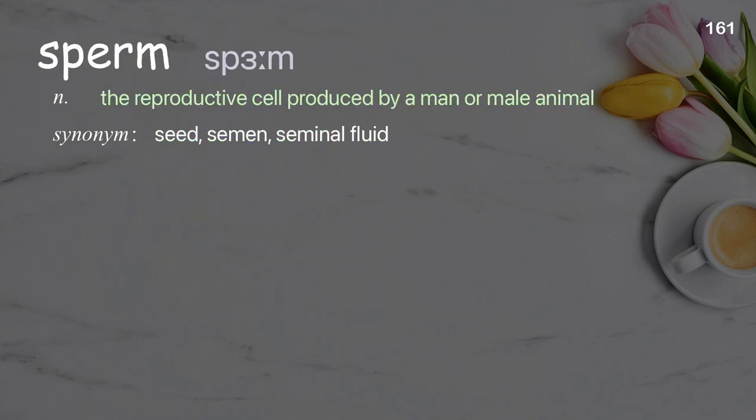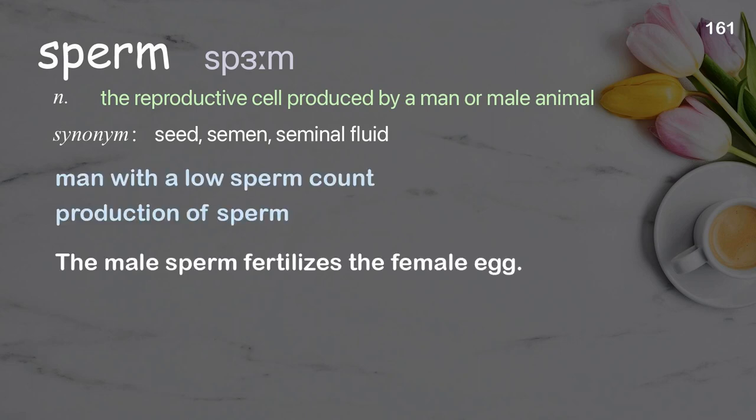Sperm: the reproductive cell produced by a man or male animal. Examples: man with a low sperm count, production of sperm. The male sperm fertilizes the female egg.